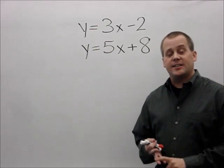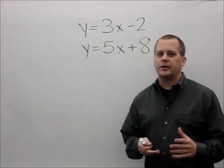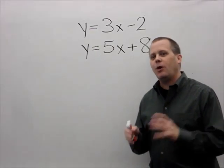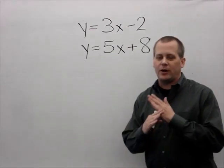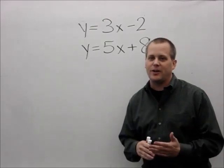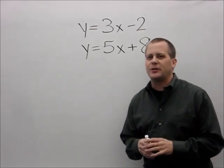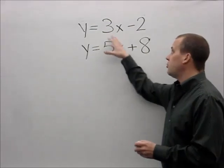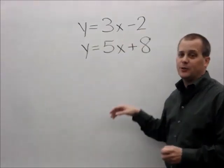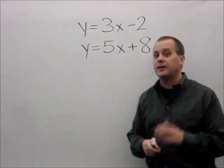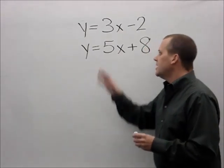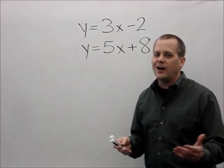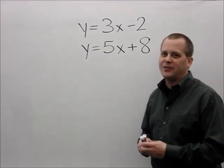Hi, welcome back Tigers. Today we're going to learn how to find the point of intersection with two equations — figuring out where these two lines will cross or intersect one another. We're going to use something called the equal methods process. I have these two equations: y equals 3x minus 2, and y equals 5x plus 8. Since they both start with y, I'm going to make them equal.